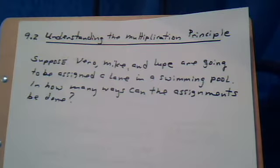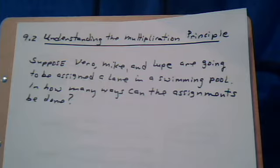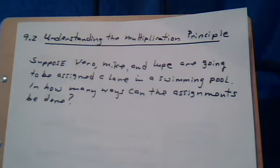Understanding the multiplication principle. Suppose Vero, Mike, and Lupe are going to be assigned a lane in a swimming pool. In how many ways can the assignments be done?